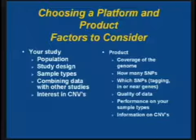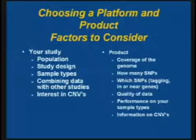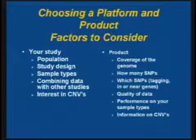Factors to consider in choosing a product include your population, study design, sample types, combining data with other studies, and interest in copy number variants. Product considerations include coverage of the genome — you get better coverage with more SNPs. Which SNPs? Are they tagging? Are they near genes? What's the quality of the data? What's the performance on your sample types? And whether there is CNV information, and what is it?